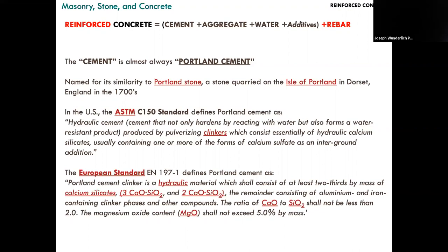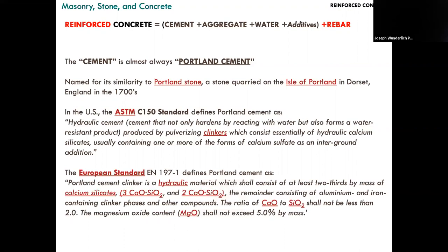In America and many places, Portland cement seems kind of specific, but its historic origins are in England — referring to Portland stone, and that name just stuck. You can see two standards here: the ASTM, the American Society of Testing Materials, which you can reference in your specifications and drawings for a project, as well as the European standard and its definition.